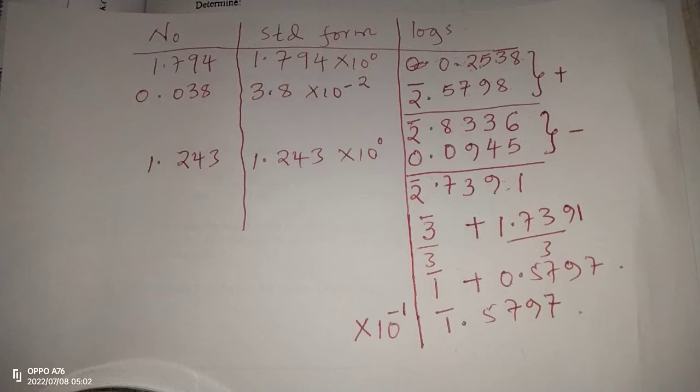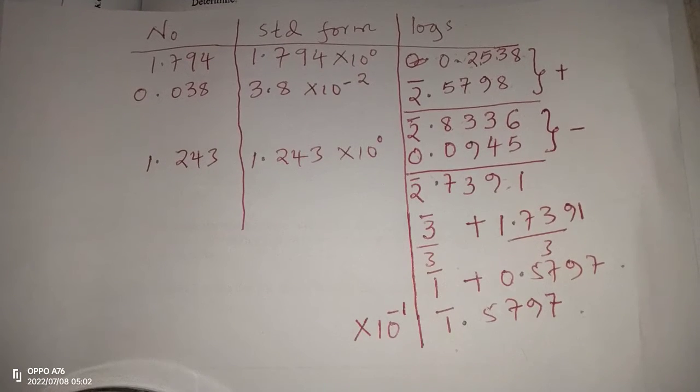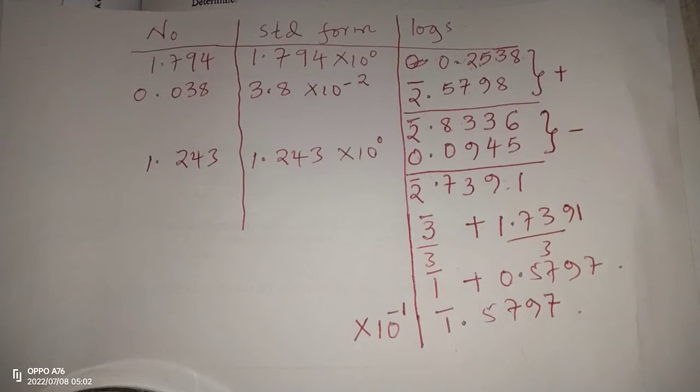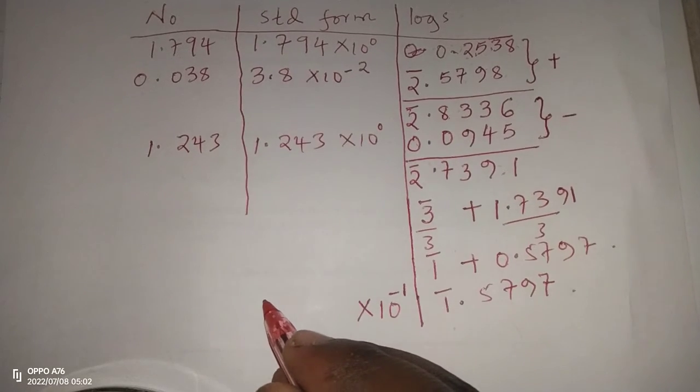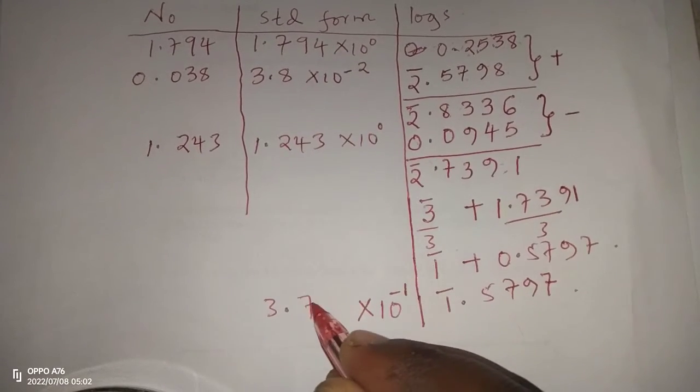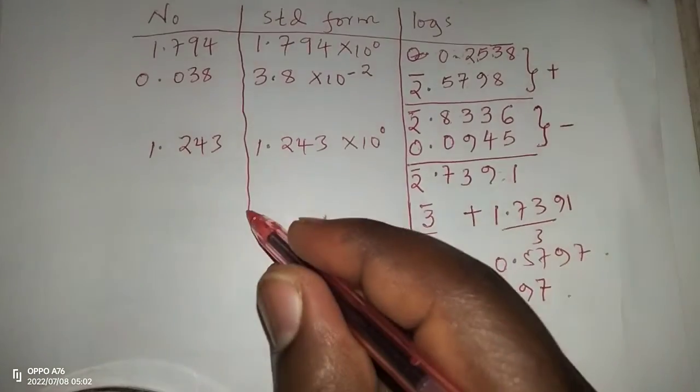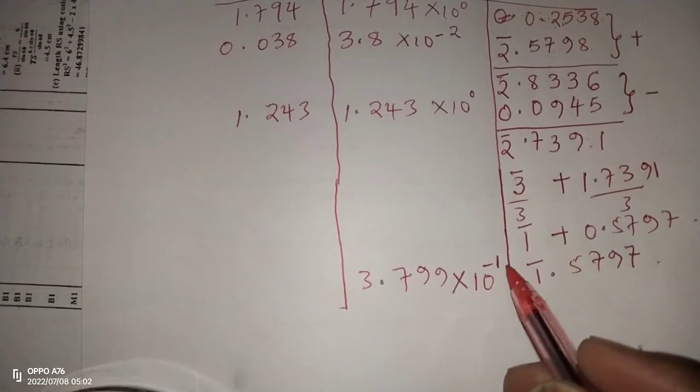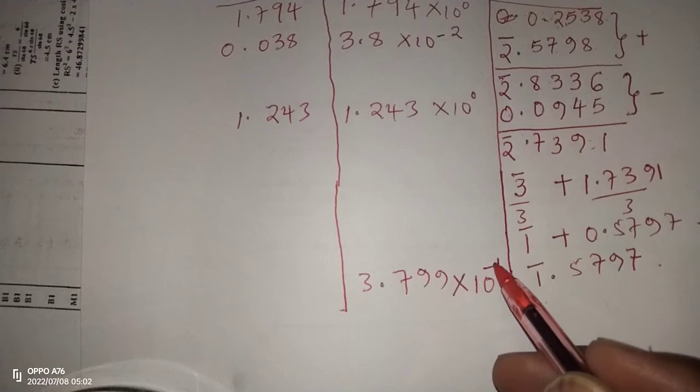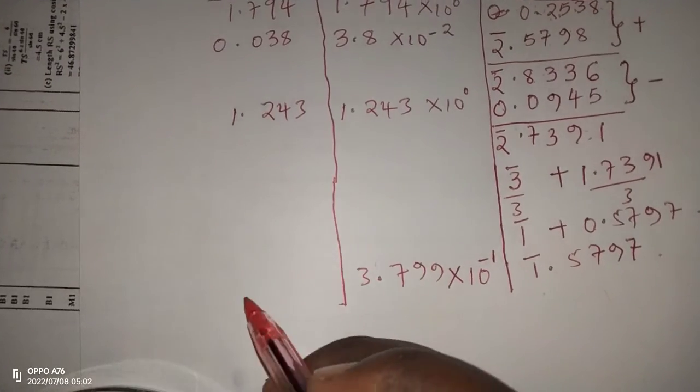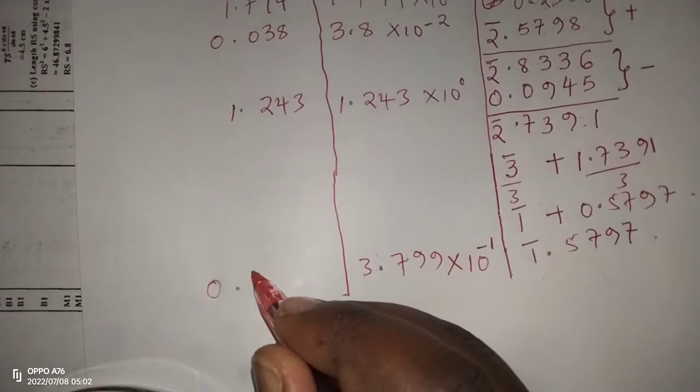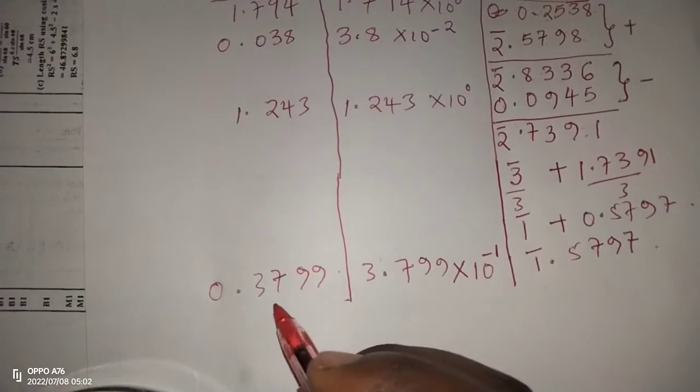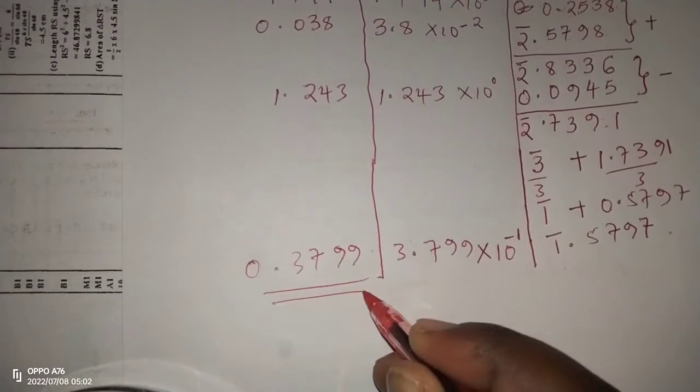So we now take what we call the anti-log, whereby we write shift log of 0.5797. And this is giving us 3.799, which means now the number whose standard form is this, is when we multiply by 10 power negative 1, which means we get 0.3799. We've been told to solve to 4 decimal places.